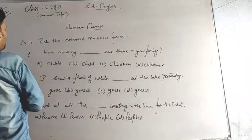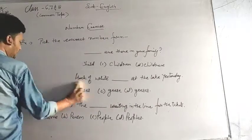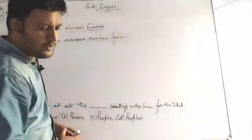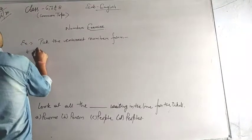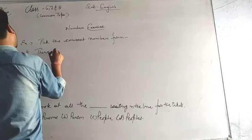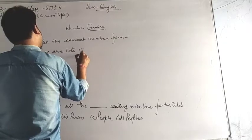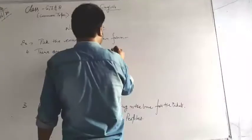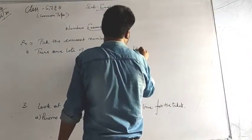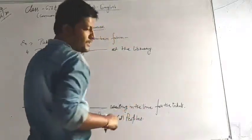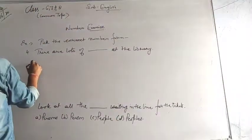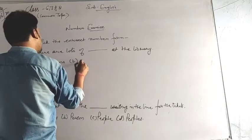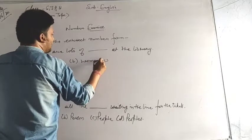Two more I am giving you to solve at your home. Just five I will give, not more than that. So three we have written, two more I am writing for you. Fourth one is there are lots of dash at the library. Option A is woman's, option B is woman, option C is women.